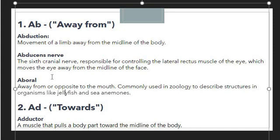Next we have the prefix 'ad', which is the opposite of 'ab'. While 'ab' shows movement away from something, 'ad' is used when showing movement towards a body part — whenever we want to make a sense of 'toward' movement. For example, adductor means a muscle that pulls a body part toward the midline of the body, so we use the prefix 'ad' to show that toward movement.